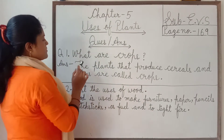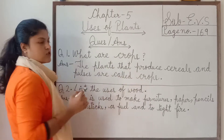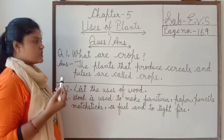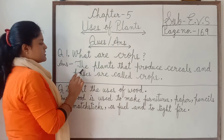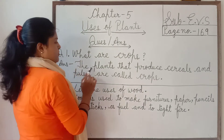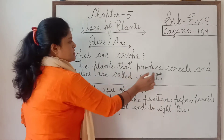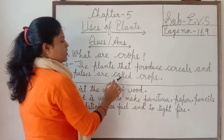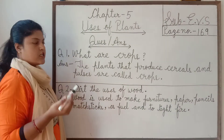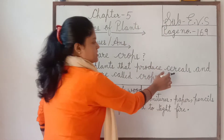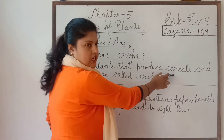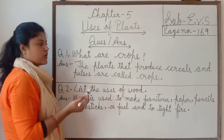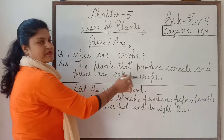Question number 1 is: What are crops? Crops kya hai, ya crops kisay kehatay hai? The answer is: the plants that produce cereals and pulses are called crops. Aise plants jo cereals means anaj aur pulses means dal grow kertay hain, unhey hum crops kehtay hain.